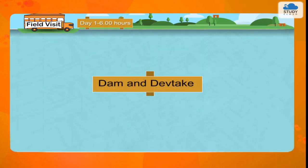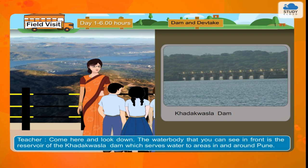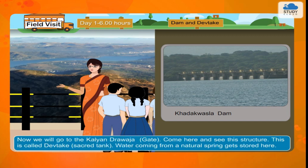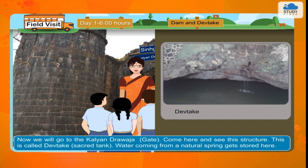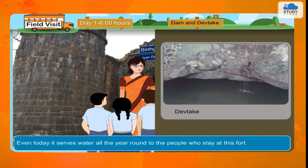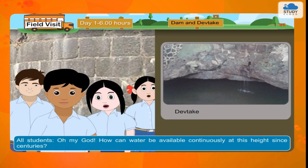Dam and Devataki. Teacher: Come here and look down. The water body that you can see in front is the reservoir of the Kadakvasla Dam which serves water to areas in and around Pune. Now we will go to the Kalyan Garraja gate. Come here and see this structure. This is called Devataki, a sacred tank. Water coming from a natural spring gets stored here. Even today it serves water all the year round to the people who stay at this fort. All students: Oh my God! How can water be available continuously at this height since centuries?